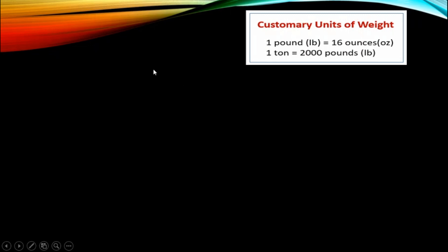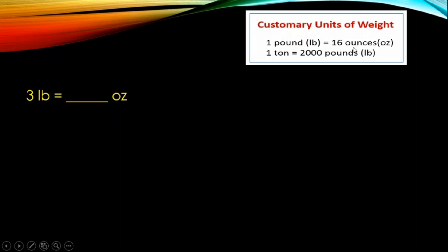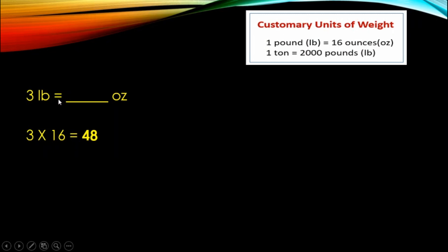Let's answer our first problem. 3 pounds equals how many ounces? Pound to ounces — left to right, larger unit to smaller unit, so you will do multiplication. 3 times 16, the answer is 48. 3 pounds equals 48 ounces.